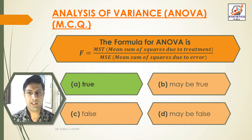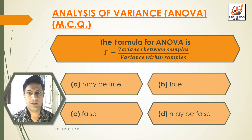Next question: The formula for ANOVA is F equals variance between samples divided by variance within samples.